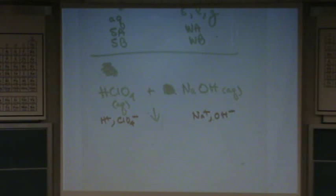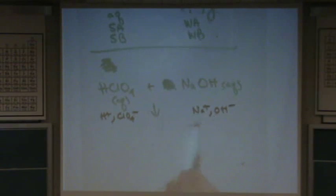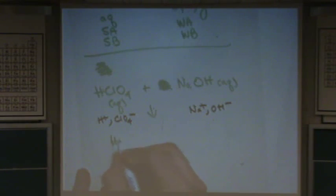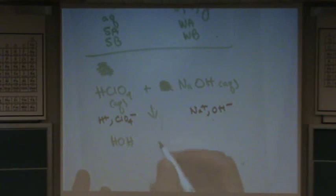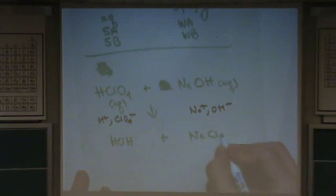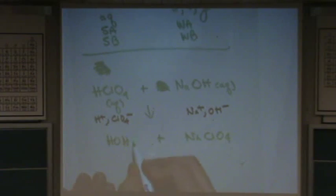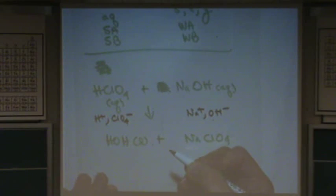So, then you write the product. This is going to be a double replacement or also called a blank reaction. If you have an acid and a base, it's called a neutralization reaction. So, we'll do the same as a double replacement. HOH, which is also known as water, plus NaClO4. HOH, what's its state? Liquid. Liquid. Water is always going to be a liquid.